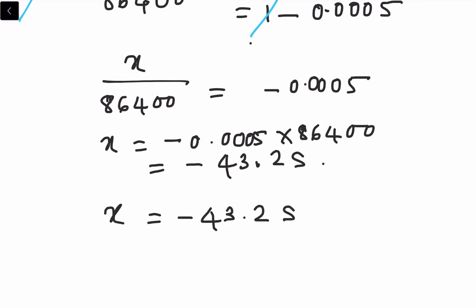Here we have a negative sign, so the negative sign shows that the clock will run slow and it will lose 43.2 seconds per day. So this is the answer for the problem.